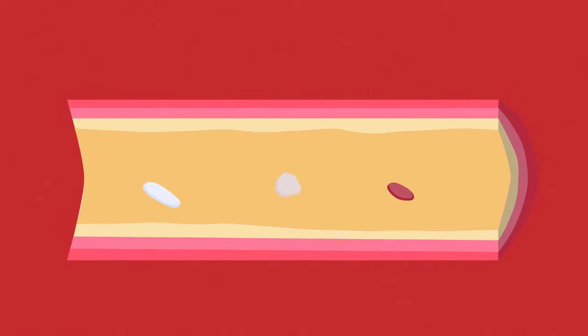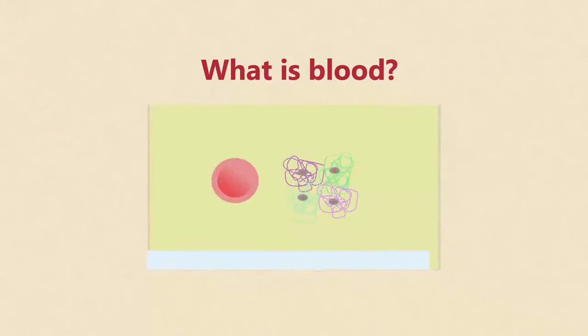You should already know that blood consists of red blood cells, white blood cells, platelets and plasma. But if you have forgotten, watch our what is blood video first. In this video we're going to look at white blood cells in particular.